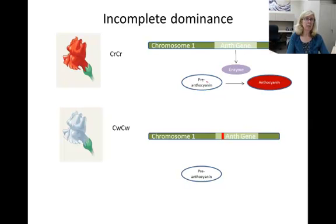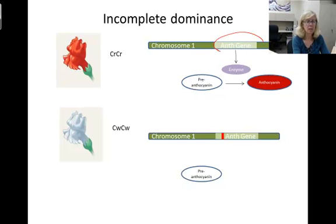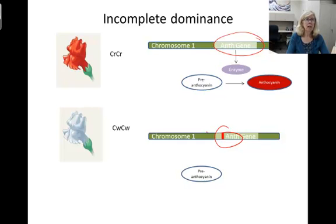The red color in snapdragon flowers is due to an anthocyanin pigment that looks red. The enzyme gene necessary for making the pigment is produced by the CR allele. The CW version of the gene contains a mutation, so it does not produce a working enzyme and no working anthocyanin is produced. So far this should look familiar, but in incomplete dominance there's a difference in the heterozygote.